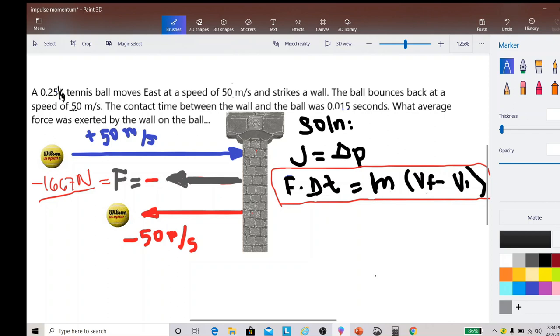Take note that the final velocity is given to be 50 m/s, but this time we have to take note of the negative sign because it is now going to the left or going to the west.